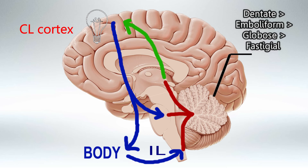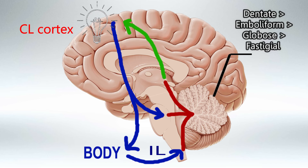The cerebellum has four main nuclei, and any signal traveling from the cerebellum to the contralateral cortex must pass through all four in order. The signal starts in the dentate nucleus, then moves to the emboliform nucleus, then the globose nucleus, and then the fastigial nucleus. It then travels via the superior peduncle to the contralateral cortex.